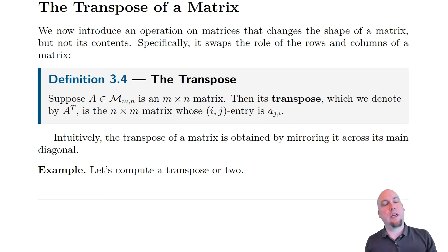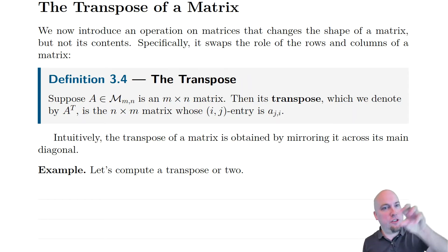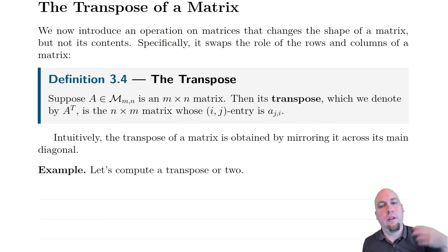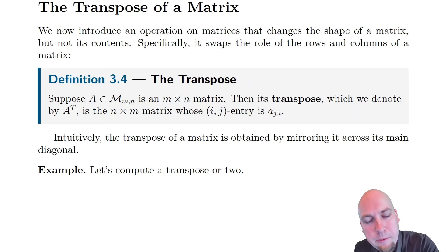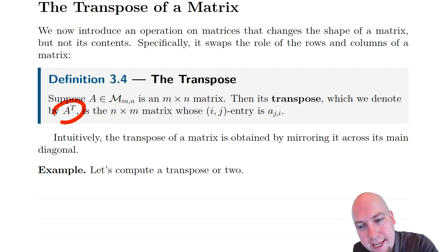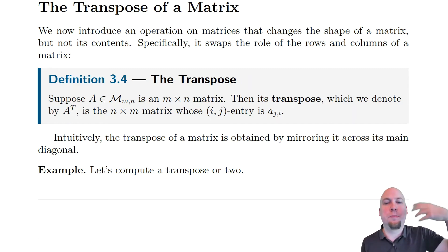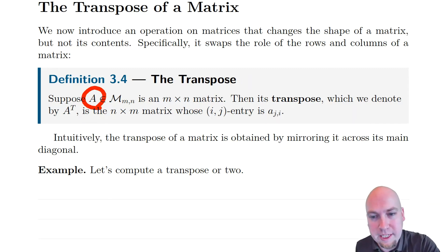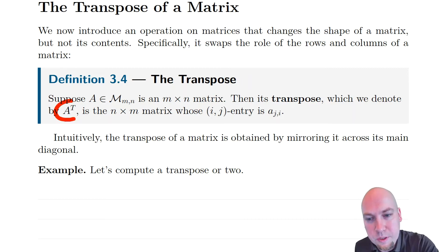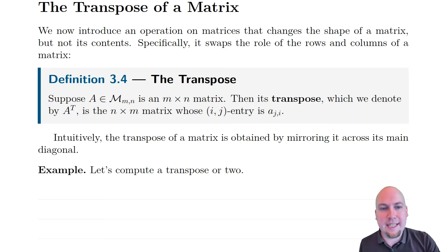So whatever entry used to be in the ij position is now in the ji position. And the way we denote the transpose is just A with a superscript T. So if A is your original matrix, then A with a superscript T is the transpose of A.